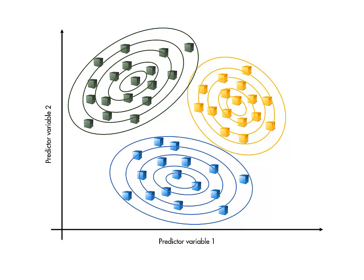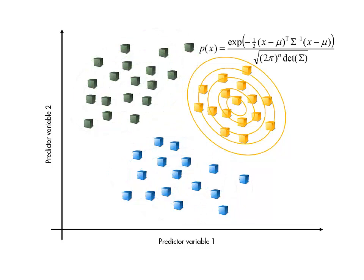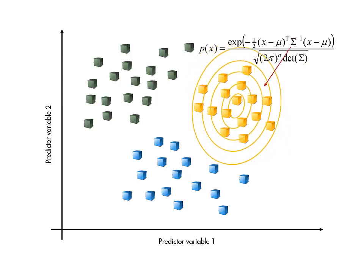Theoretically, we could fit an n-dimensional normal distribution to the observations in each class. This involves calculating the mean vector and covariance matrix for each class. These determine the center and shape of the distribution, respectively.